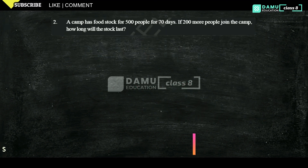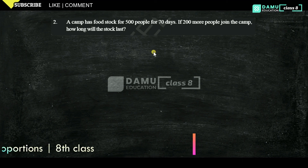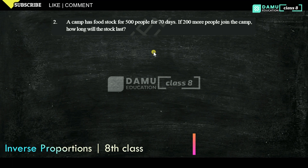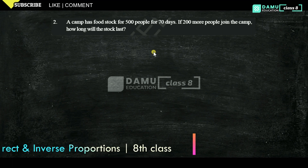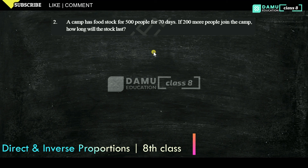Hello viewers, thanks for watching our videos. If not yet subscribed, please subscribe and click the bell icon. In this module, we are going to discuss: a camp has food stock for 500 people for 70 days. If 200 more people join the camp, how long will the stock last? For 500 people it lasts 70 days; adding 200 gives 700 people, so the number of days will decrease because food stock decreases with more people.